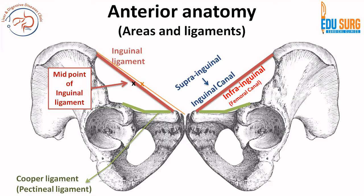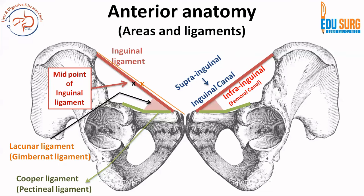There are a lot of named structures in this area. The inguinal ligament is also known as Poupart's ligament. The Cooper's ligament or pectineal ligament sits on the pectineal line. A reflection of the inguinal ligament towards the Cooper's ligament is known as the lacunar ligament or the Gimbernat's ligament. So three important ligaments: the inguinal ligament, the lacunar ligament (a posterior reflection towards the pubic ramus), and the Cooper's ligament which is the posterior-most structure.